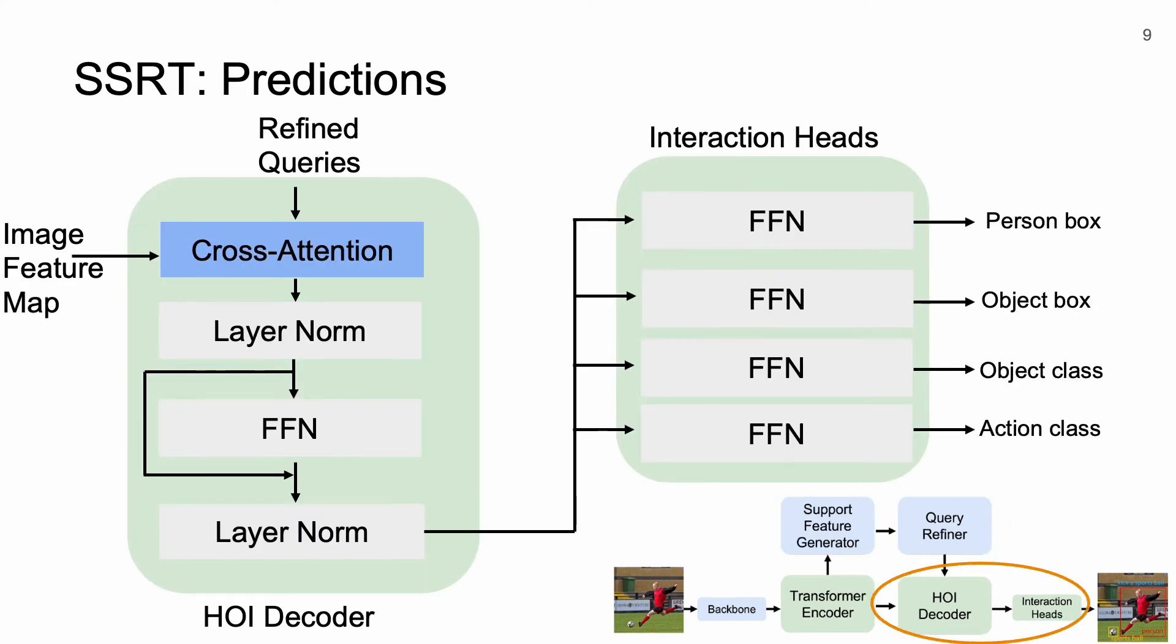Now the refined queries will attend the image feature map and different feed-forward networks will be used to make the final HOI predictions. This part of the network follows the existing one-stage architecture designs.